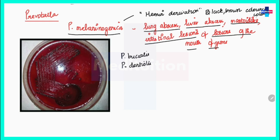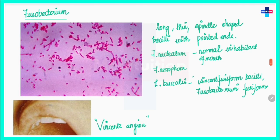Prevotella melaninogenica also produces a characteristic red fluorescence when exposed to ultraviolet light. We can see this red fluorescence in cultures of Prevotella melaninogenica, and even dressings from wounds caused by this organism show the characteristic red fluorescence under UV light.